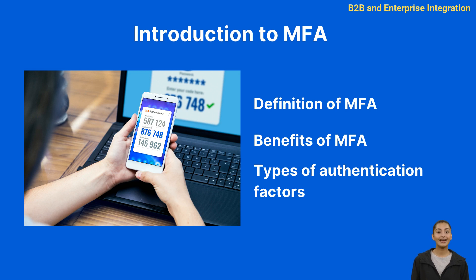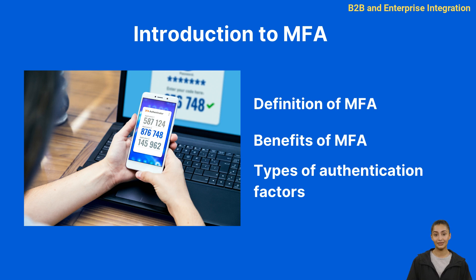Multi-factor authentication, often referred to as MFA, is an essential element of comprehensive cybersecurity. It is a method that requires users to provide multiple forms of verification to prove their identity before gaining access to a particular system or application. MFA works on a simple principle: to use two or more separate categories of credentials to validate the user's identity. These categories typically fall into three types: something you know, like a password or PIN; something you have, like a smart card or mobile device; and something you are, like a biometric characteristic such as a fingerprint or voice pattern.